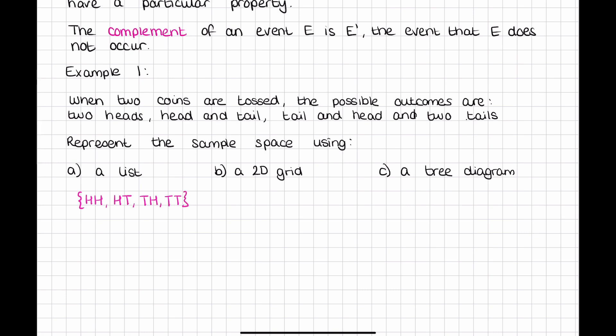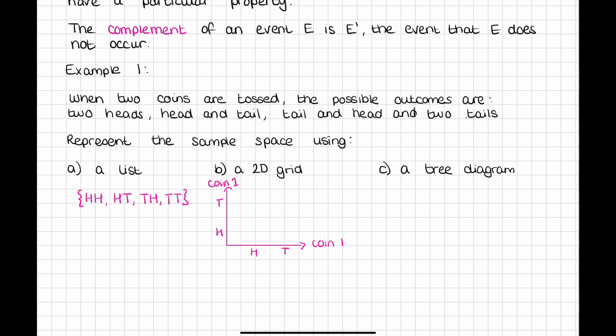Now on a 2D grid we draw a set of axes. We label our heads and tails, so head, tail, head, tail. This would be coin one, this would be coin two, and then we just put dots at the possible outcomes. So we could have a head then a head, a tail then a head, a head then a tail, or a tail then a tail.